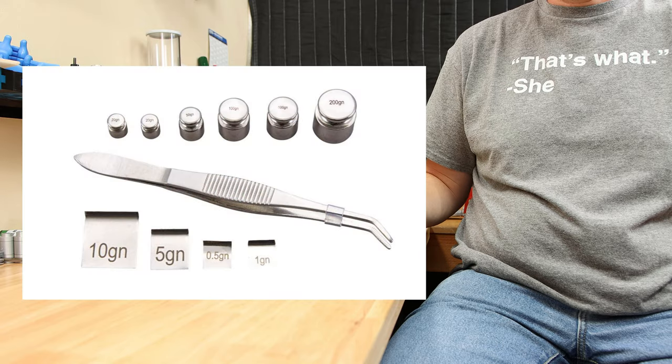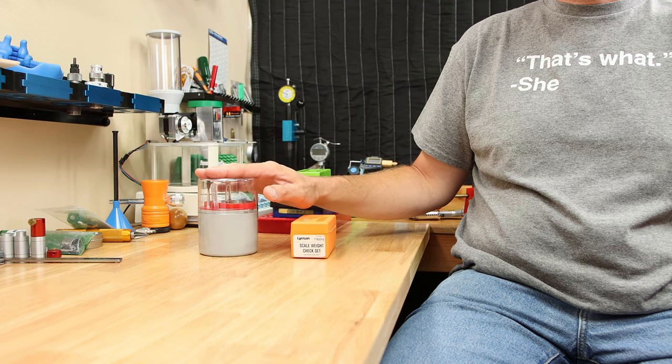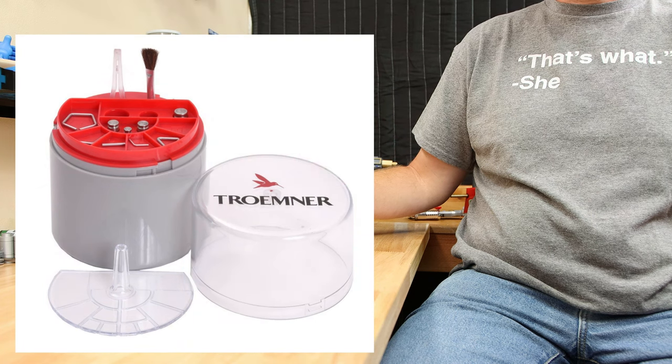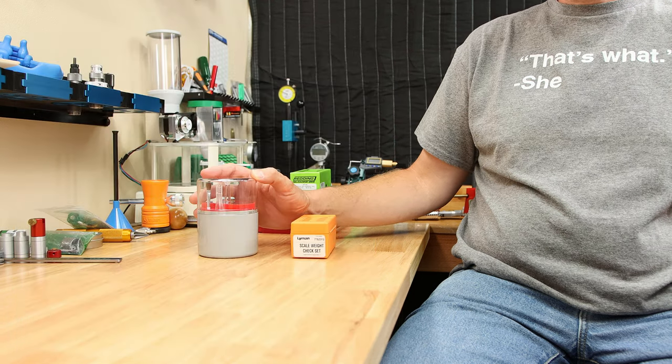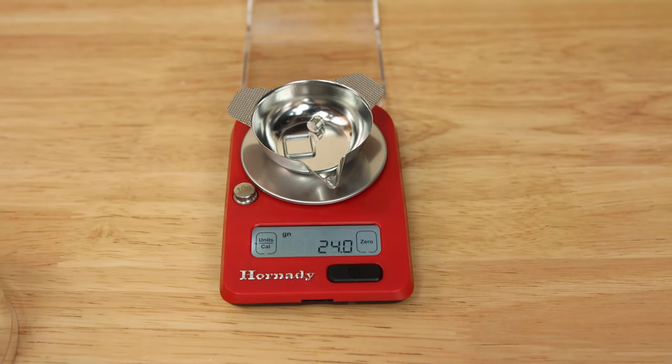For example, RCBS has a set that's running around $24 at this time. There's also two other kits available from Tromner. The large set is just under $28, and there's a small set that's just over $20. Checking your reloading scale before you use it takes very little time, and I think it's a super important step when you're reloading.